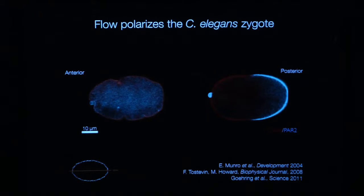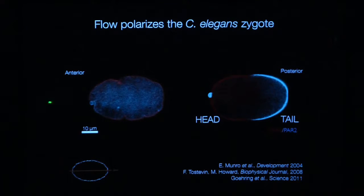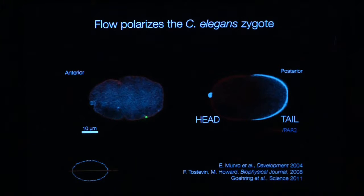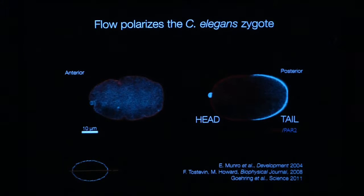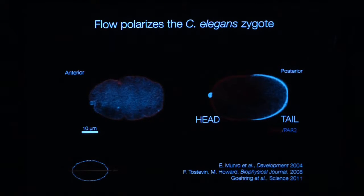Here we've labeled myosin. There's a period of coherent flow from the posterior tip towards the anterior tip. This cortical flow is responsible for polarizing the zygote — it breaks symmetry by establishing the anterior-posterior body axis. It does so by redistributing markers of polarity. These red and blue proteins are markers of polarity, and the system starts off with red all over the surface. After six to eight minutes of flows, there's an asymmetric distribution.